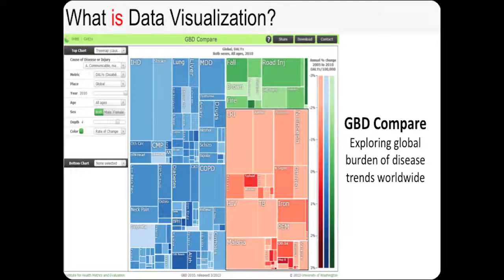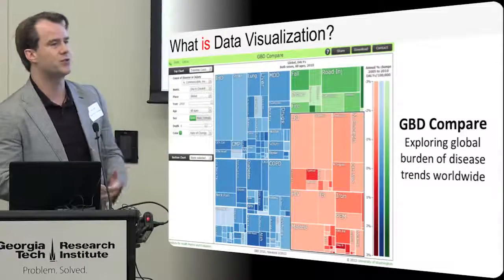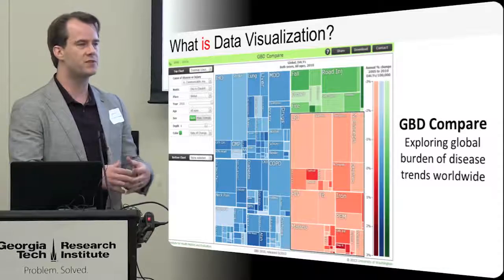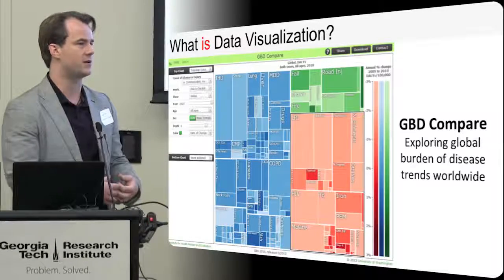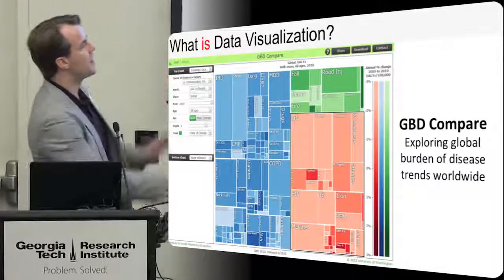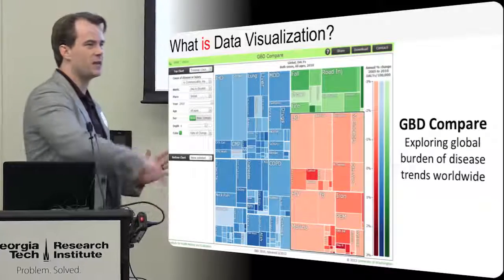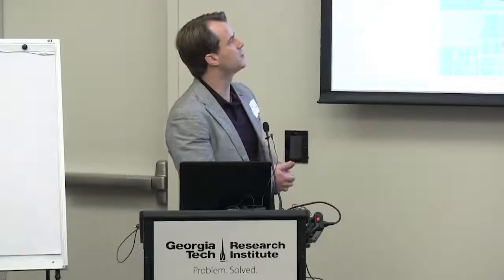Here's another more complex example, from the University of Washington. What we're looking at here is the global burden of disease. This is a visualization known as a tree map. It's a good way of exploring the number of cases that exist in categories and subcategories of data. If you think about cutting brownies into smaller and smaller pieces, that's kind of how this visualization works.